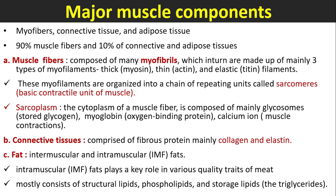The major muscle components are myofibers, connective tissue, and adipose tissue. Muscle fibers make up 90 percent of muscle, and 10 percent is connective and adipose tissue. Muscle fibers consist of many myofibrils, which are made up of mainly three types of myofilaments: thick, thin, and elastic. Thick filaments are known as myosin, thin ones are known as actin, and elastic ones are known as titin filaments.